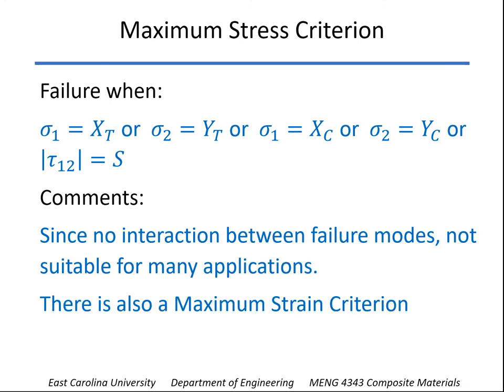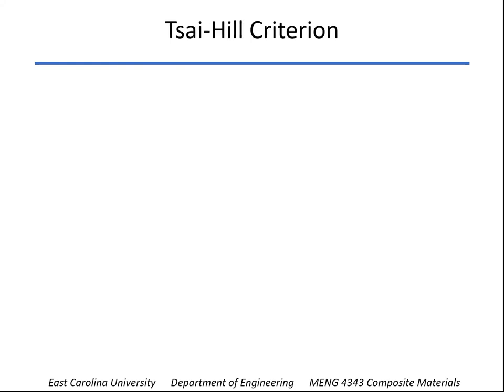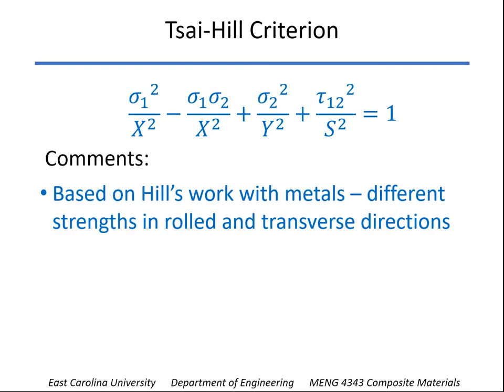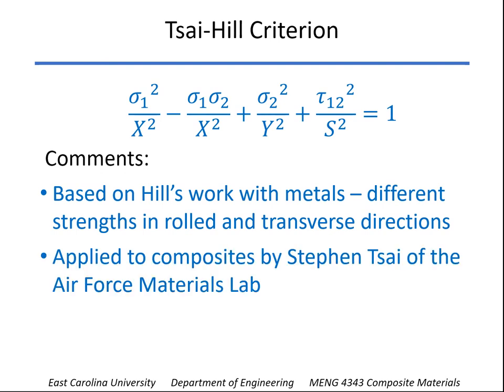There's also a maximum strain criterion similar to that, where we look at just the strain values instead of stress. The Tsai-Hill criterion was one of the first used widely for composite materials. It's based on work done by Hill, who worked with metals — specifically metals that were rolled, which have different grain structures and different strengths in the rolled and transverse directions. Stephen Tsai at the Air Force Materials Lab took Hill's work and applied it to composites, hence the Tsai-Hill criterion.